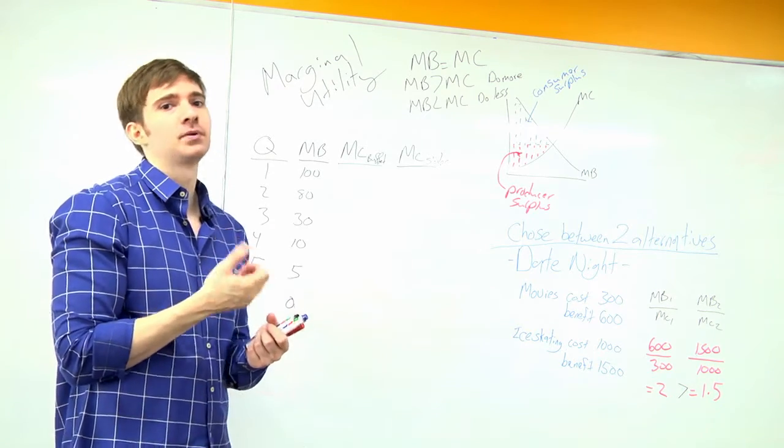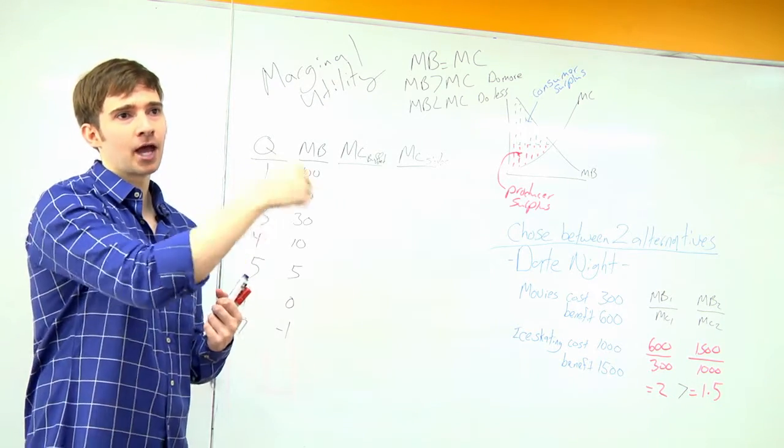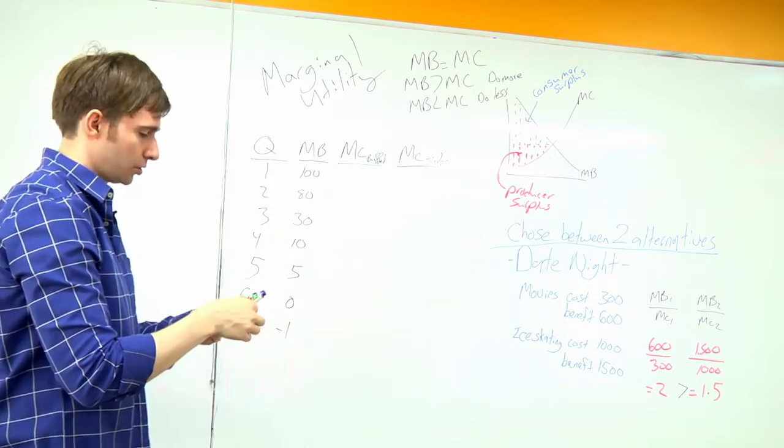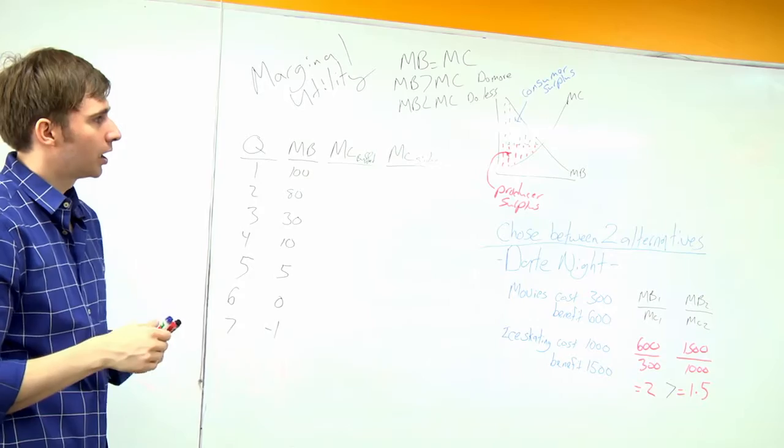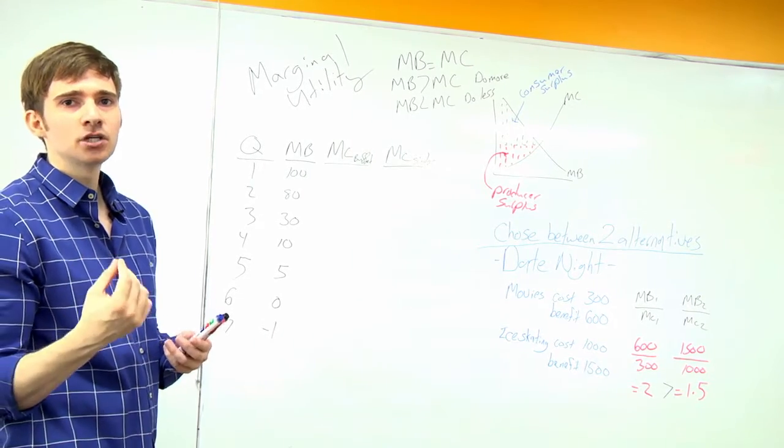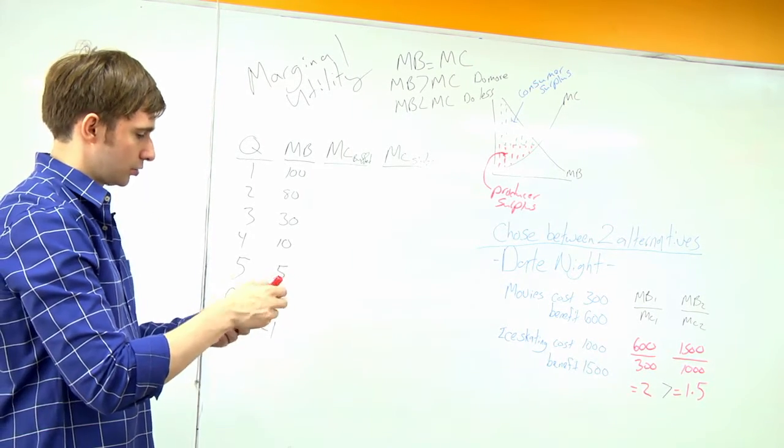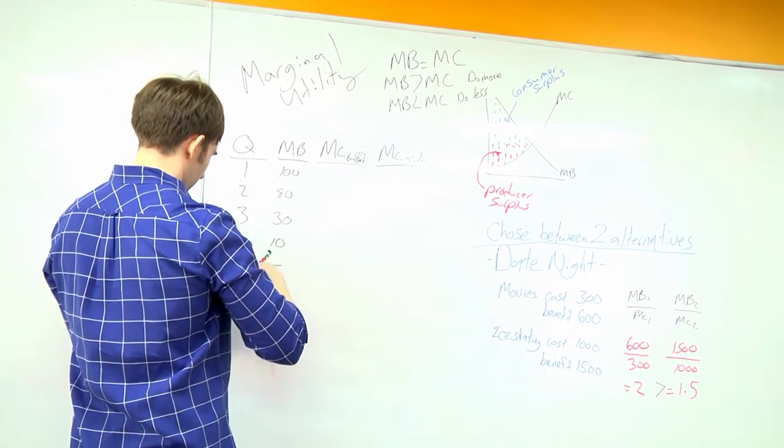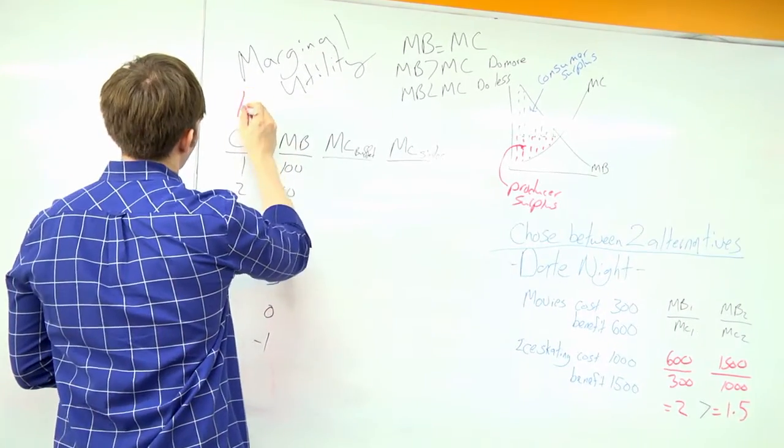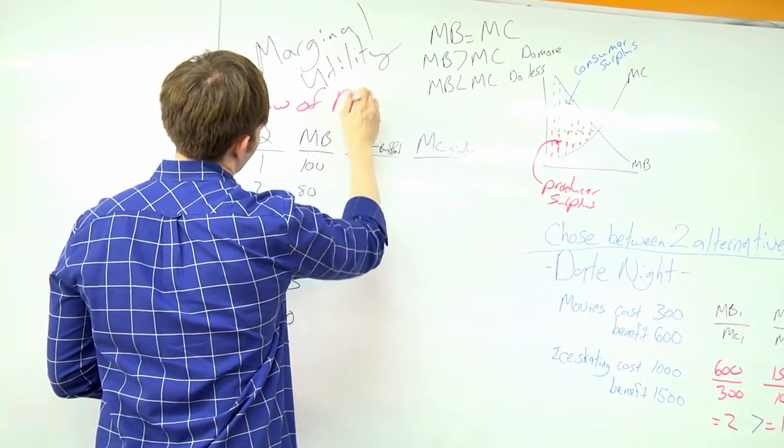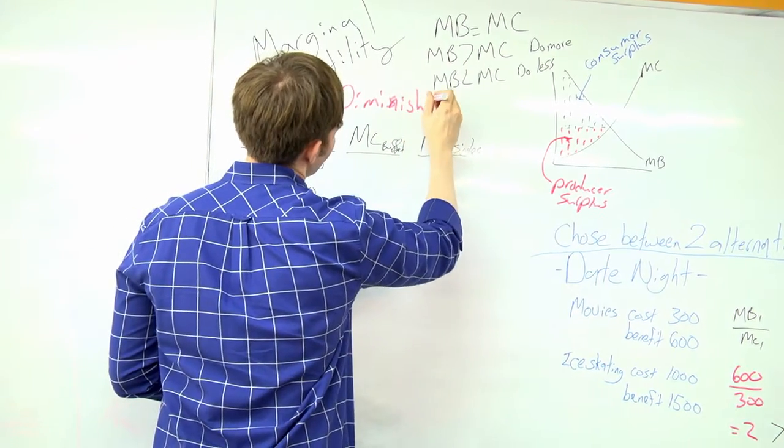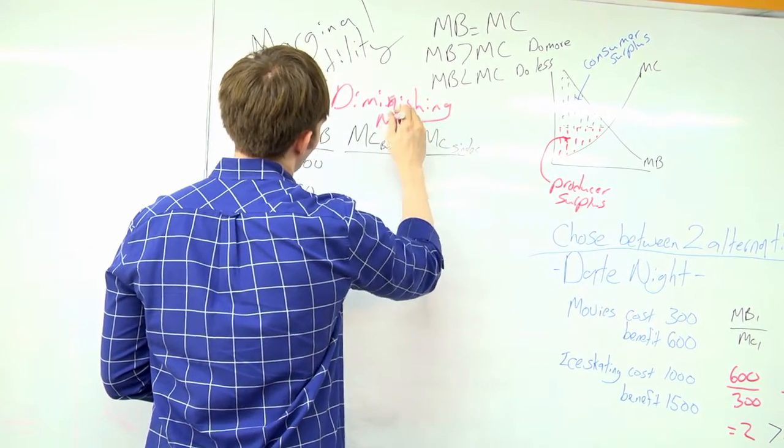The first apple makes me the happiest. And by the time I have the fifth apple, I'm getting less and less happy on each additional unit. This is known as the law of diminishing marginal utility or benefit. The law of diminishing marginal benefit.